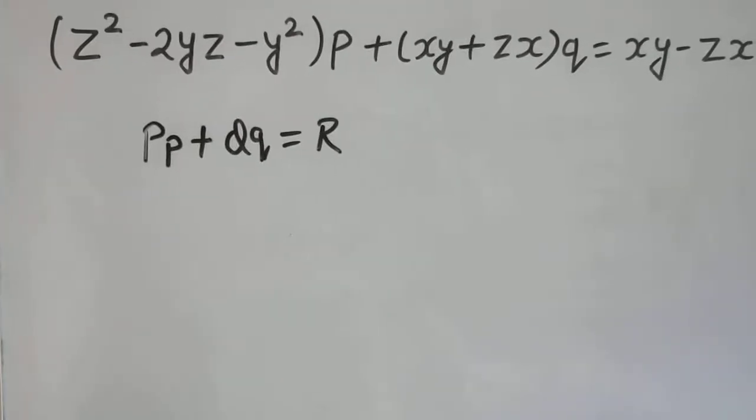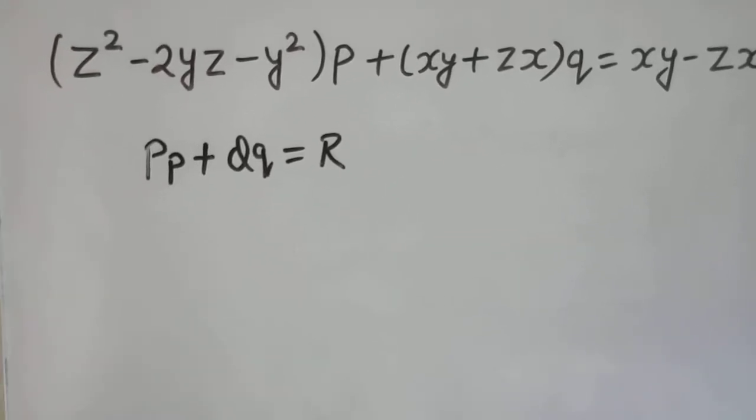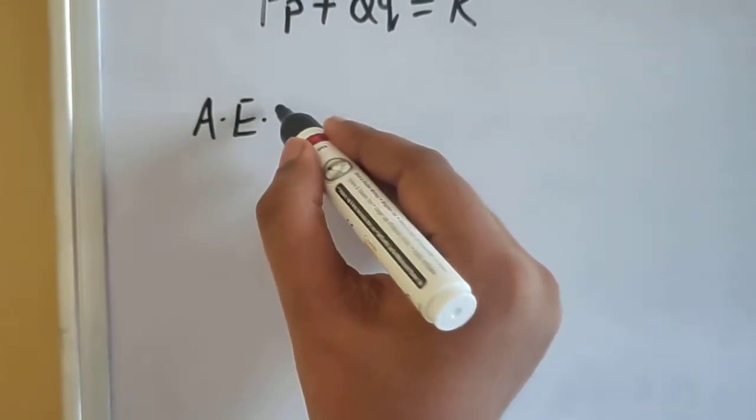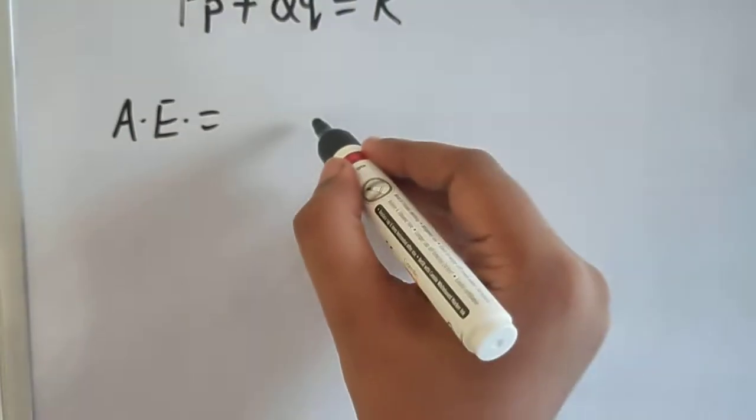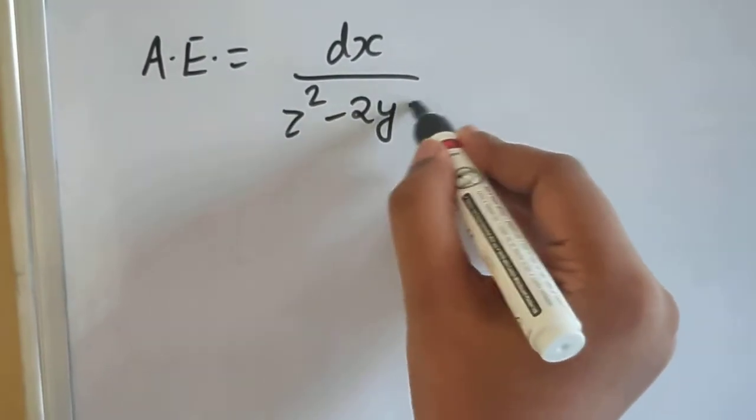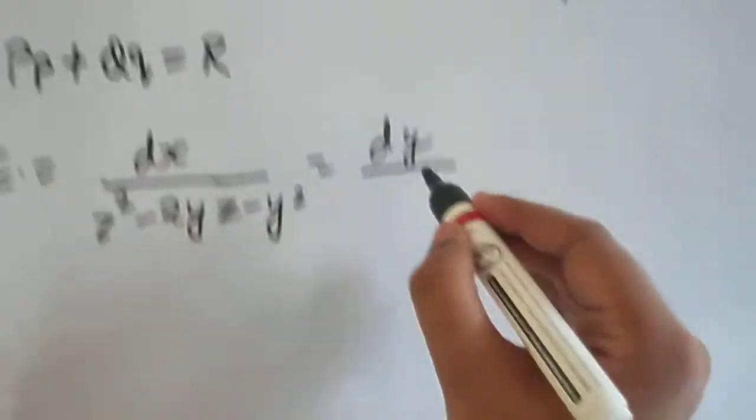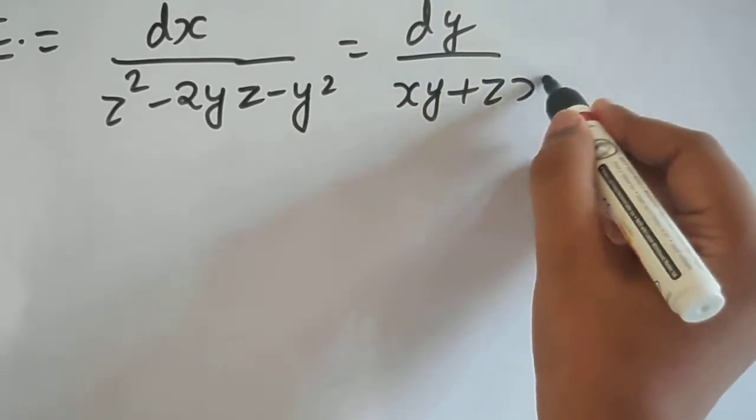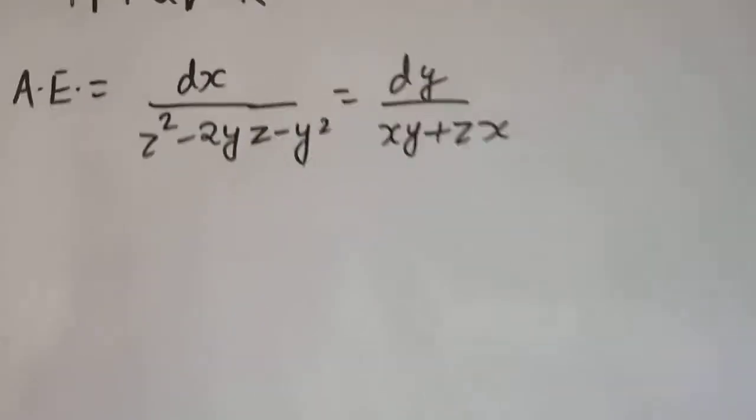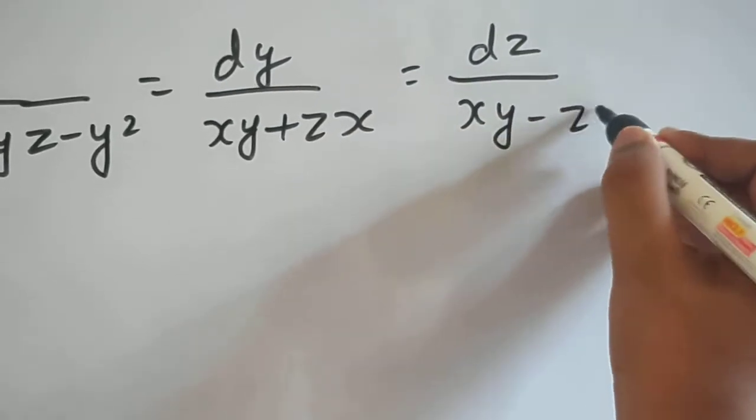And so we can move ahead by writing what we call the auxiliary equation in Lagrange's method or subsidiary equation sometimes. So what is our auxiliary equation that is DX by P, P is Z square minus 2YZ minus Y square. Here, this equals to DY by Q which is XY plus ZX and let us write the third which is DZ divided by R which is XY minus ZX.